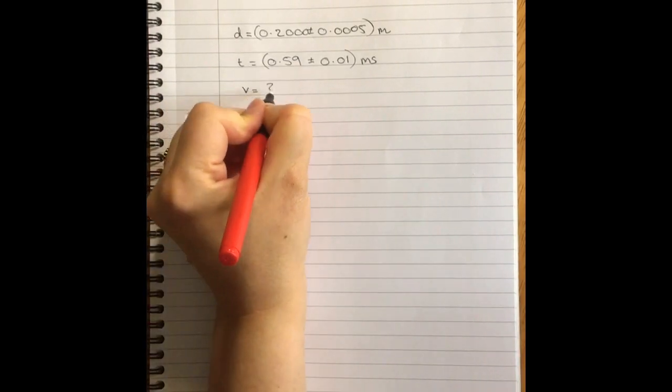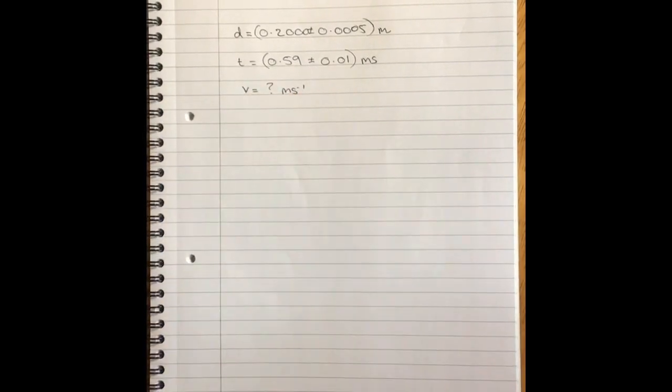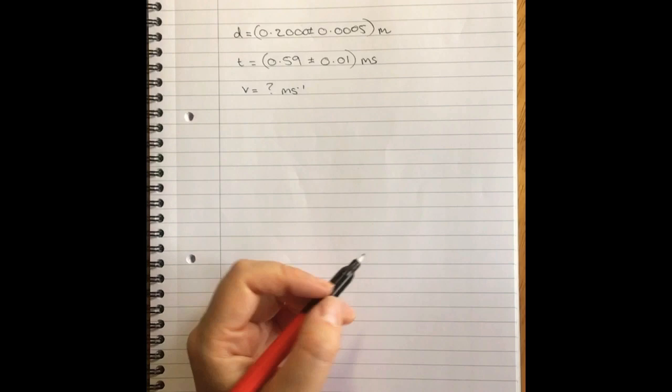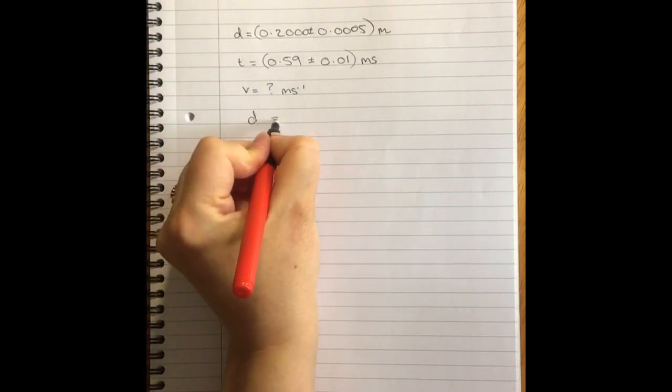And we would like to find our speed. So that's how I would expect any physics student to lay out their information. And now we're going to do the calculation. Now, when you first do the calculation guys, you just ignore that the uncertainties are there at all. You just get the number and deal with the uncertainties after.